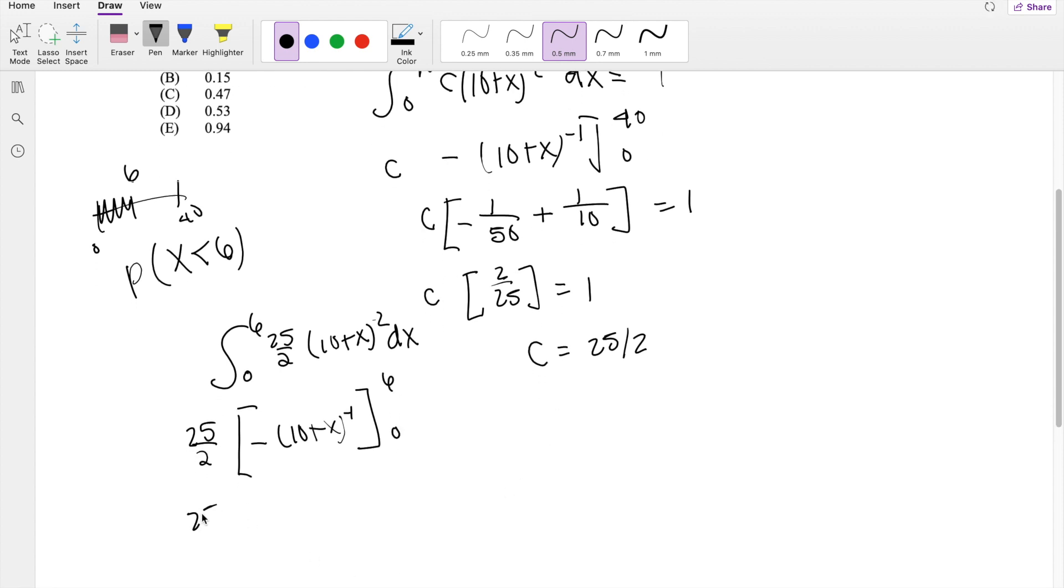I mean 0 to 6. 25 over 2. And here you get negative 10 plus x. That's going to be 1 over 16 minus minus becomes positive. 1 over 10.